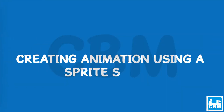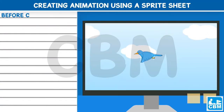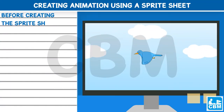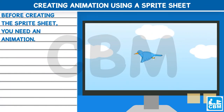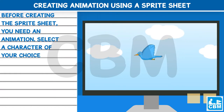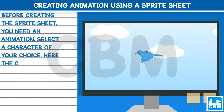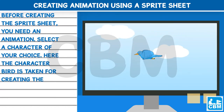Creating Animation Using a Sprite Sheet. Before creating the sprite sheet, you need an animation. Select a character of your choice. Here, the character bird is taken for creating the animation.